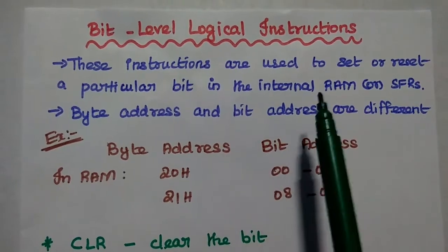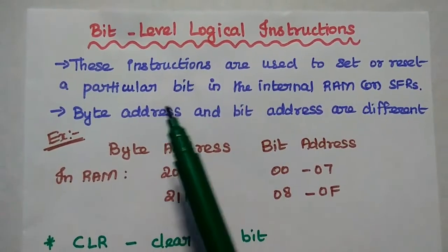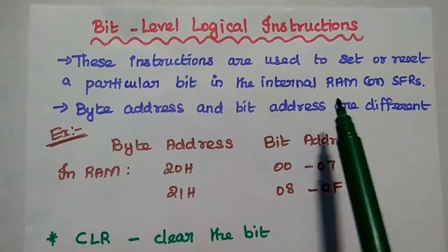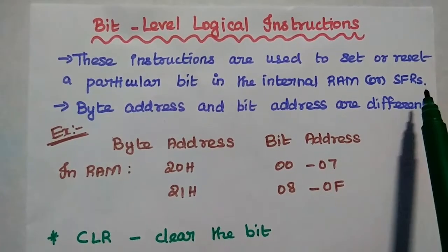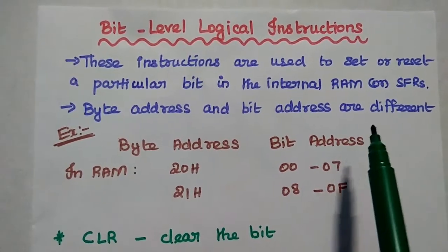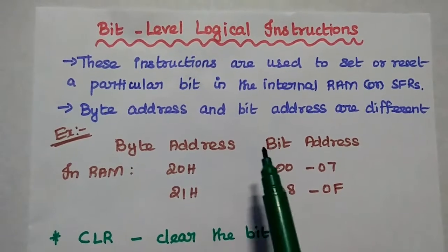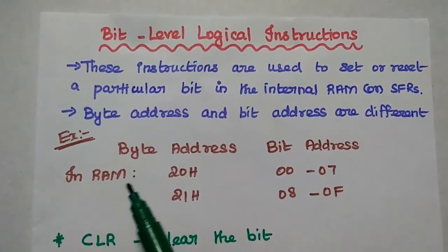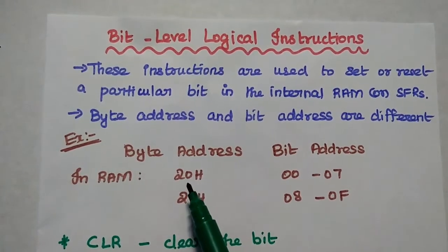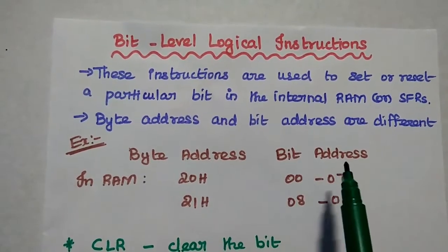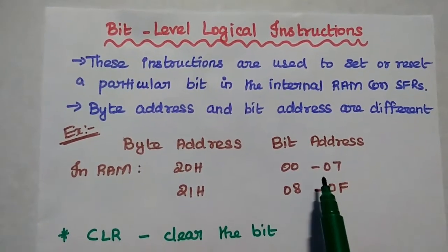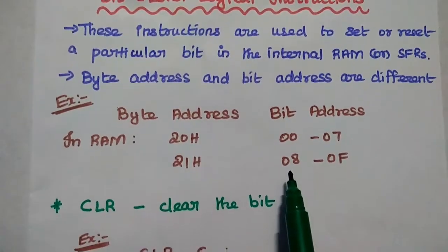The next category is bit level logical instructions. These instructions are used to set or reset a particular bit in the internal RAM or special function registers. The byte address and the bit address can be different. For example, in RAM the byte address can be 28, but for the bit address we use 00 to 07, where each bit is defined by its location.